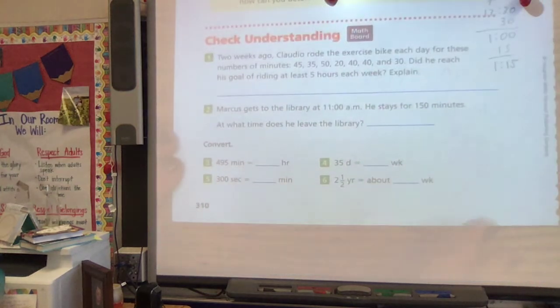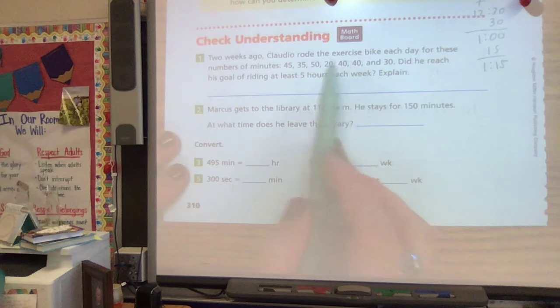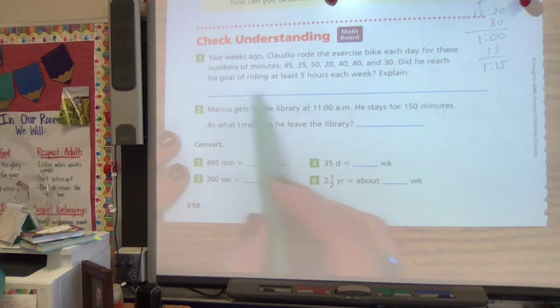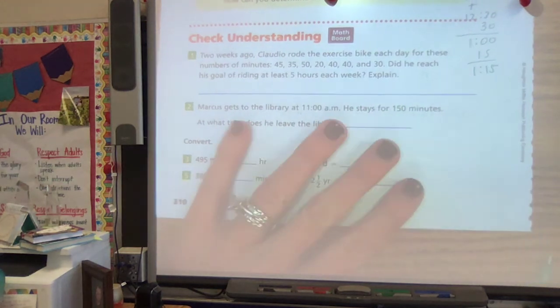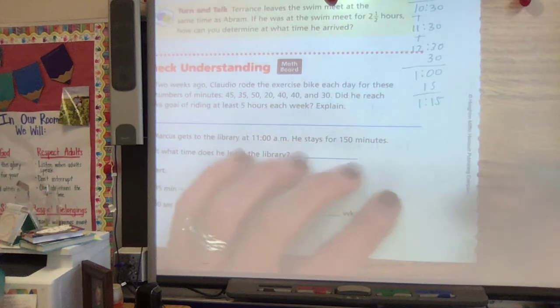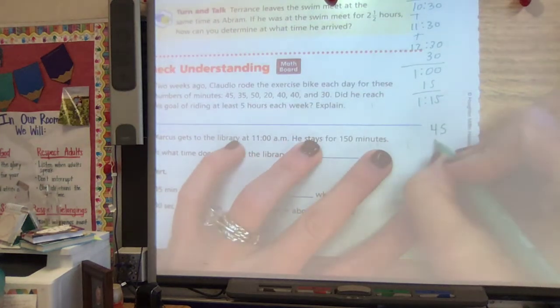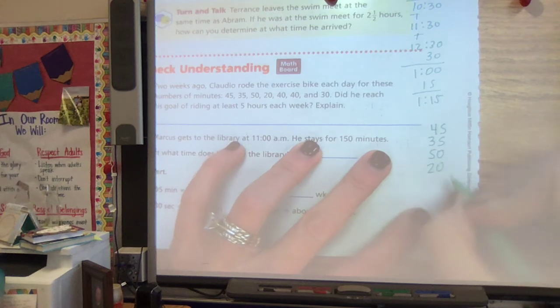Next we have Claudio again. He rode his exercise bike each day for these number of minutes. Did he reach his goal for riding five hours? All right, let's see if he did it again. So let's put our numbers here. We've got 45, 35, 50, 20, 40, 40, 30.